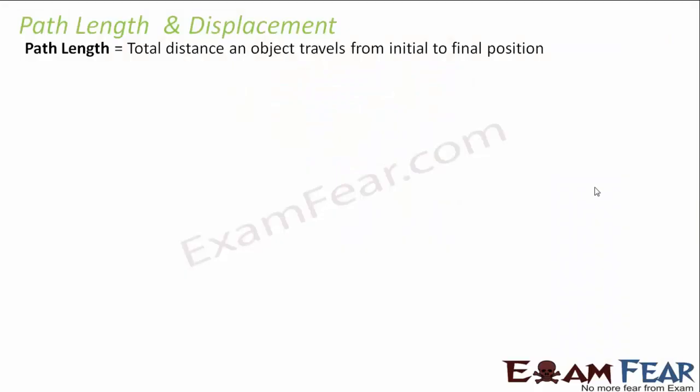Path length is also sometimes known as distance, so both terms are used synonymously. What is path length? It is the total distance an object travels from initial to final position. That means the entire path through which you are reaching your destination from your initial position is known as path length.